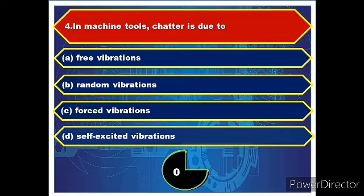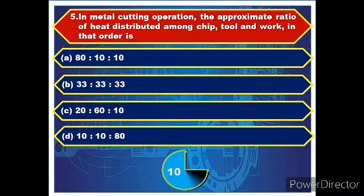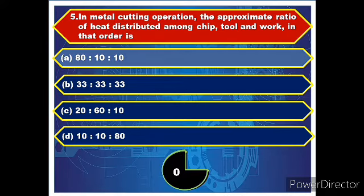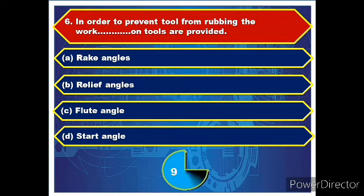Answer: self excited vibrations. Question number five: In metal cutting operation, the approximate ratio of heat distributed among chip, tool, and work in that order is? Answer: 80 is to 10 is to 10. Question number six: In order to prevent tool from rubbing the work, what angle on tools are provided?